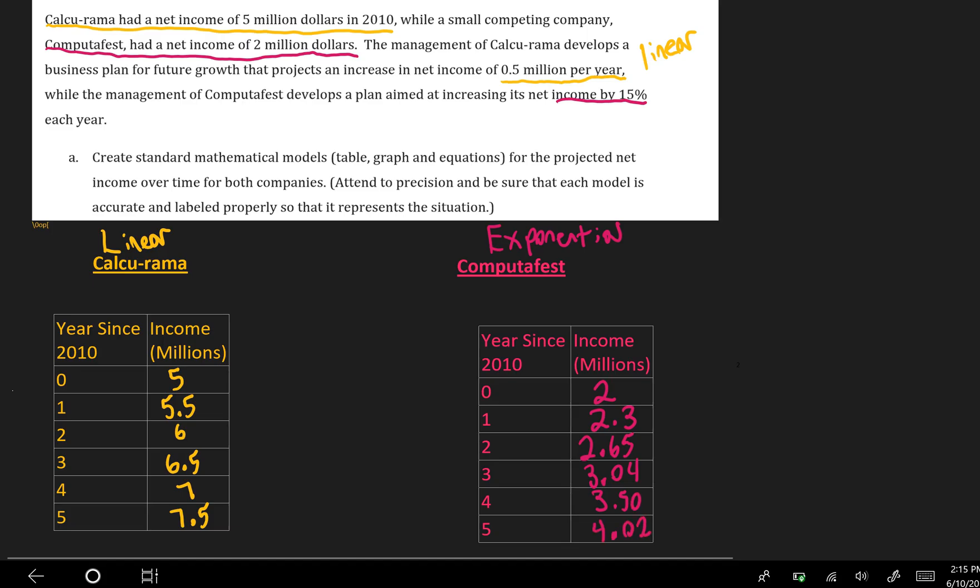So right now if I was asked to invest in each of these companies just based on this data, I might be tempted to say I'm going to invest in Calcurama because their income numbers are just better, they're higher. But that's what we really want to compare is how do linear and exponential growth relate to each other over time, which one grows more quickly. And so we're going to need to make a graph of these situations, and to do that we're going to need to write function rules.